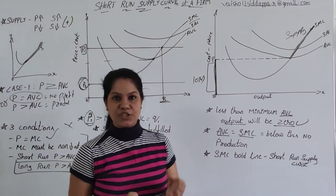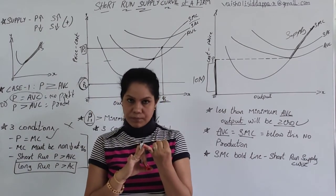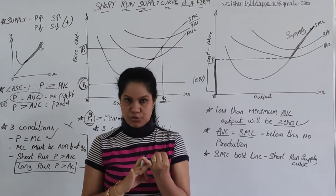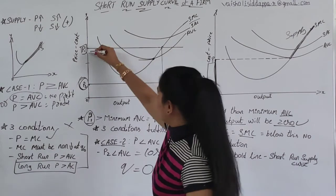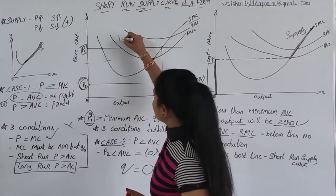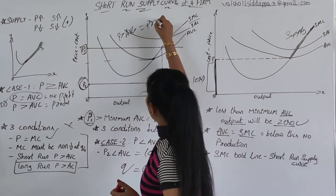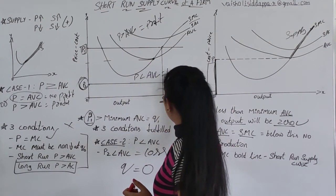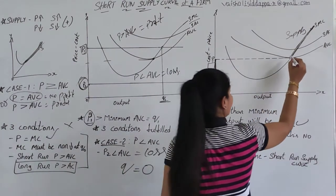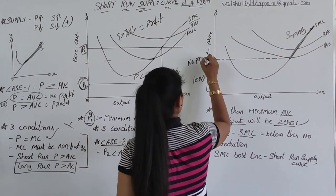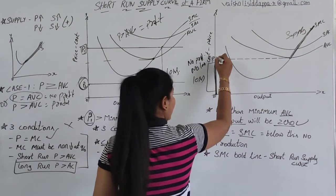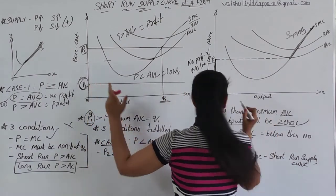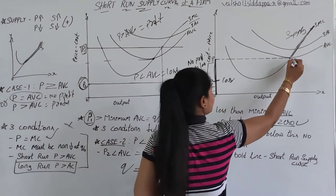So we can conclude there are three situations: first, the firm is going to make a profit; second, no profit, no loss; third, a loss situation. If price is P1, price is greater than AVC — profit situation. If price is P2, price is lesser than AVC — loss situation. When AVC equals SMC, that is the no-profit, no-loss point. Any price fixed below minimum AVC will be a loss — that is why P2 below minimum AVC is a loss situation.